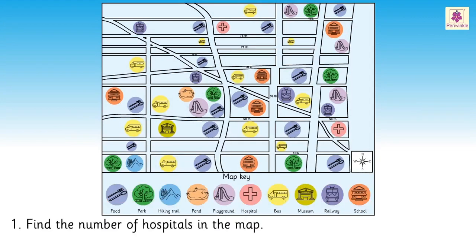Question 1: Find the number of hospitals in the map. Look, this is the symbol of a hospital. On counting the hospitals in the map, we get the answer as two hospitals.